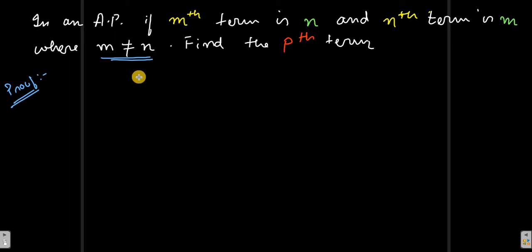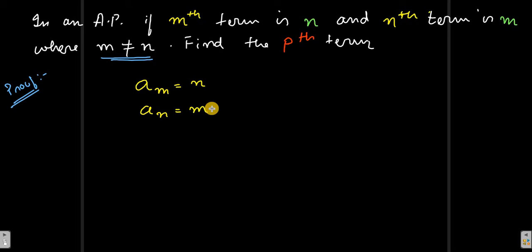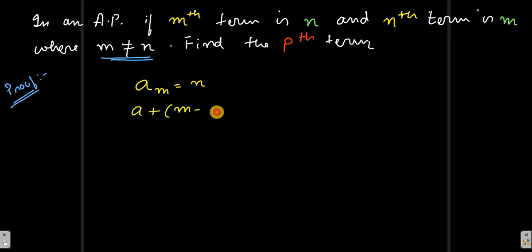What we have to prove is: the mth term is n, so we can write it as a_m equals n, and a_n equals m. Now with a_m equals n, we can write it using the AP formula as a plus (m minus 1) into d equals n, where a is the first term and d is the common difference.